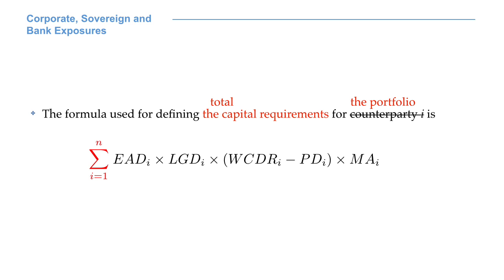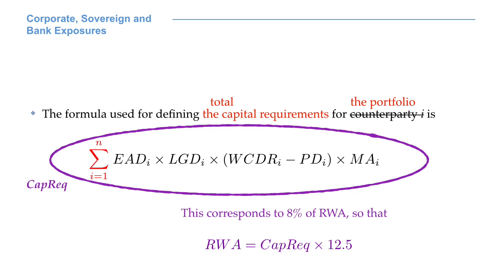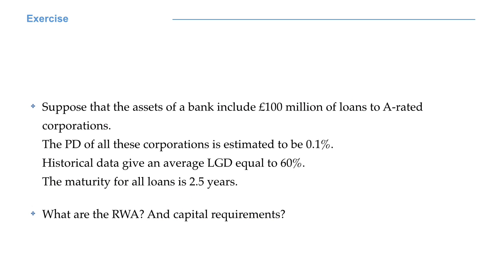The total capital requirements for credit risk in a portfolio are simply given by summing the capital requirements of all the counterparties that belong to the portfolio. Those capital requirements need to be covered with tier 1, additional tier 1, and tier 2 capital, according to the rules we have seen in week 1. Since capital requirements are 8% of risk-weighted assets, we have that risk-weighted assets are 12.5 times the amount of capital requirements.